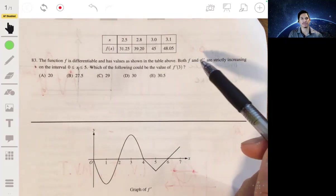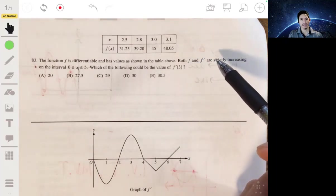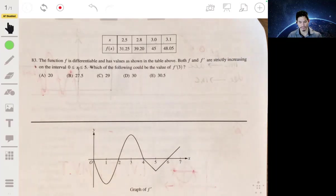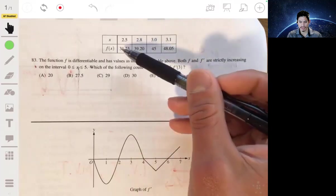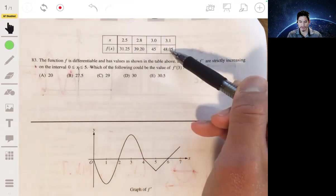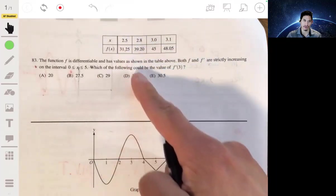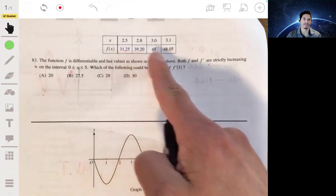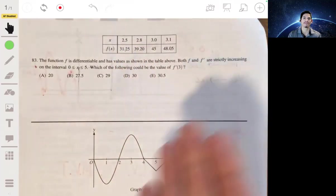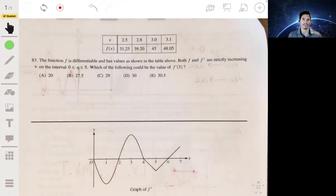Since it's saying strictly increasing, that essentially means it's always increasing. Opposed to just increasing, where the end value is more than the beginning but it could get lower somewhere in between. Strictly increasing means the derivative is always positive in that interval.